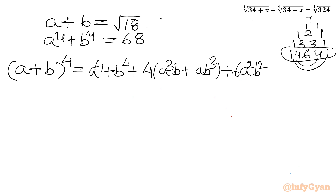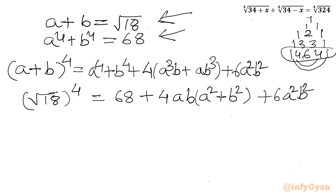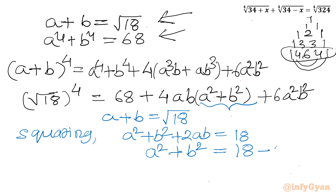We know the value of a plus b is root 18, so the LHS becomes (root 18) to the power 4, which equals 324. We know a⁴ plus b⁴ equals 68. Taking ab as common from the middle terms gives: 324 equals 68 plus 4ab(a² plus b²) plus 6a²b². Since a plus b equals root 18, squaring both sides gives a² plus b² plus 2ab equals 18, so a² plus b² equals 18 minus 2ab.